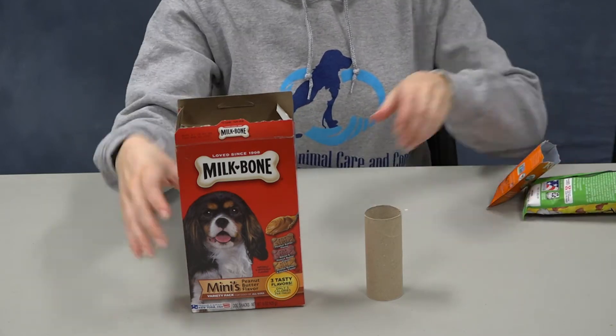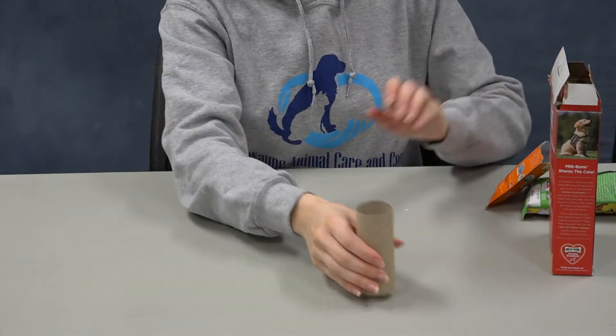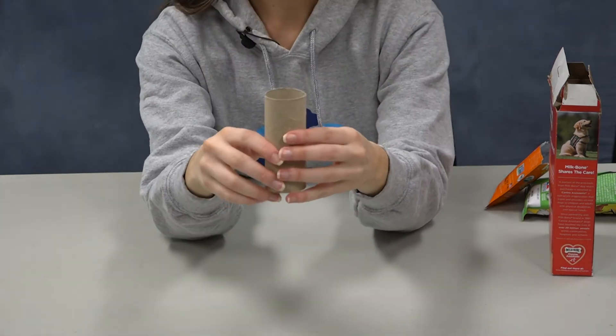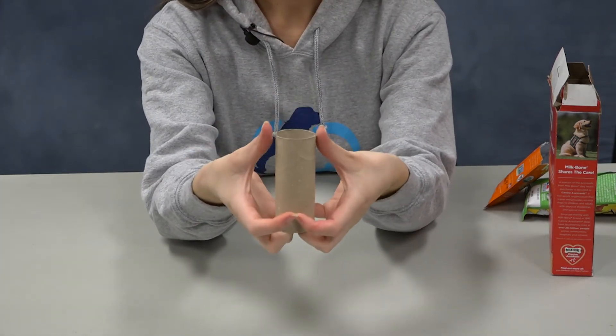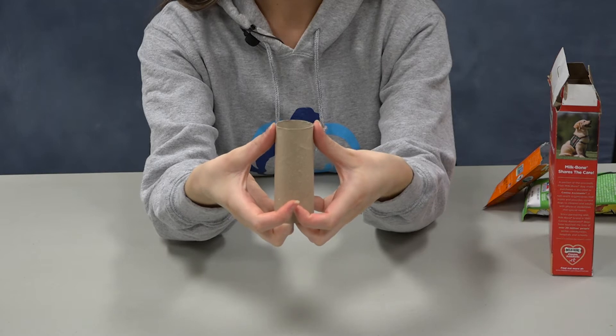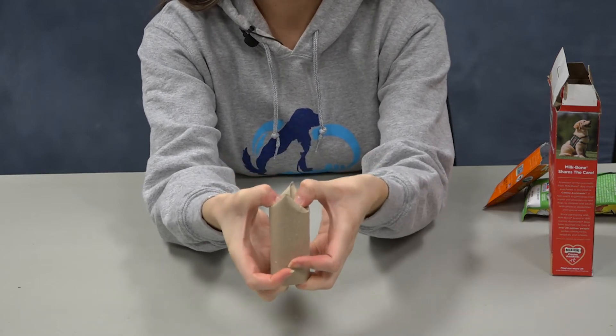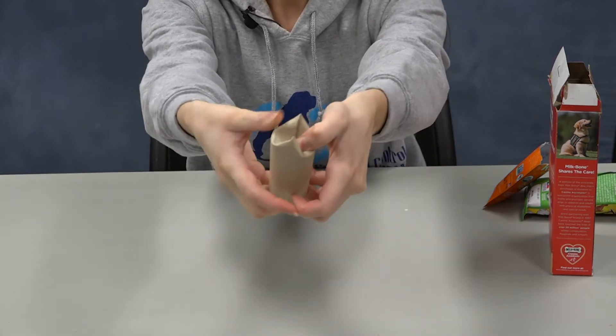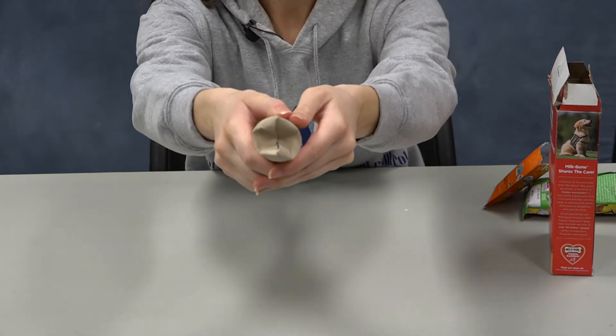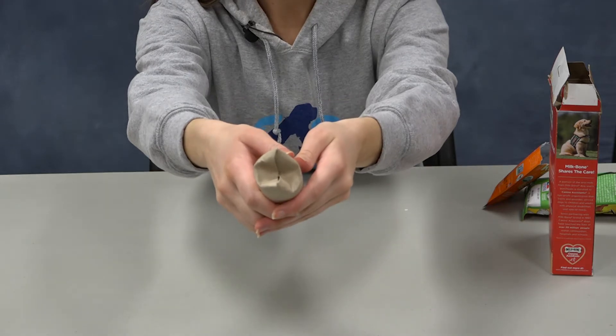So first, you're going to put your treats aside for a second and take your toilet paper roll and hold it up. Take your two thumbs on the side and press really hard down into the center of your toilet paper roll. So it should end up looking like this and look dented in so that the treats can't fall out.